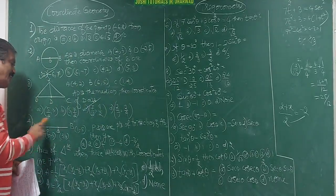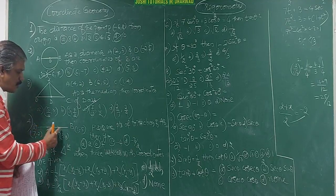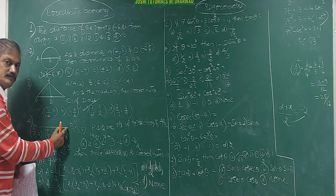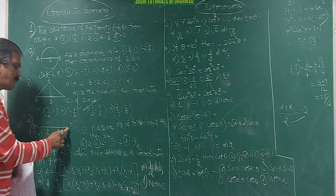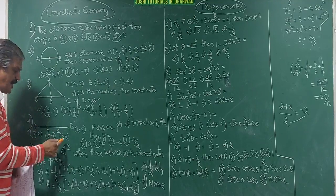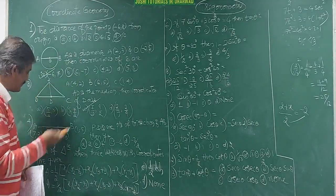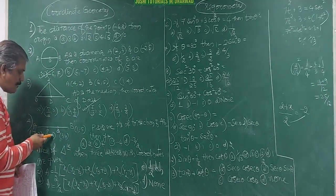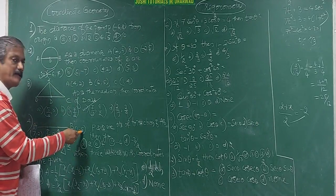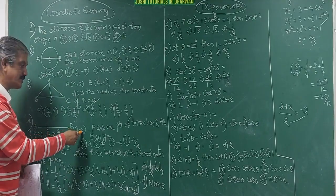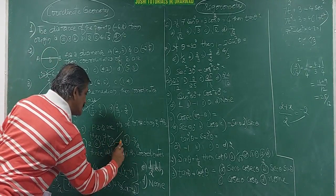P and Q are trisection points, meaning AP = PQ = QB. So Q is the midpoint of PB. Taking the second coordinate: (−3 + (−5))/2 = −8/2 = −4. The answer is −4.